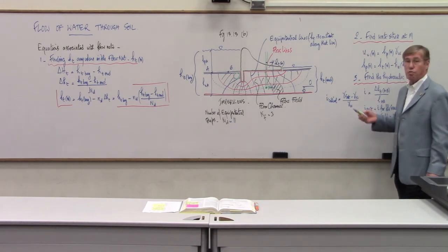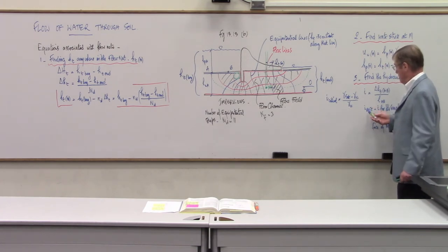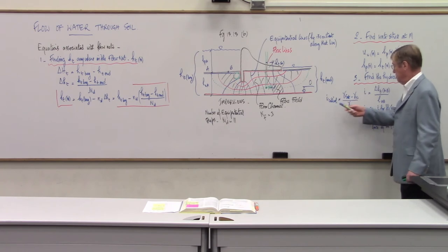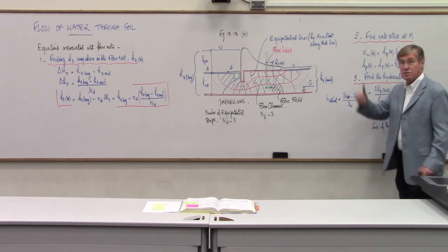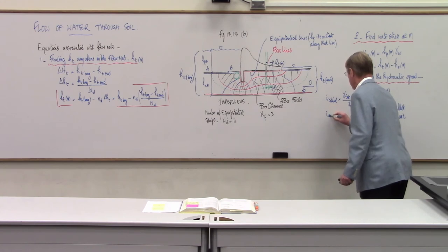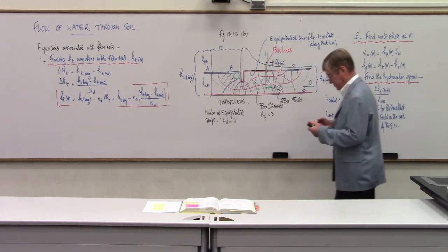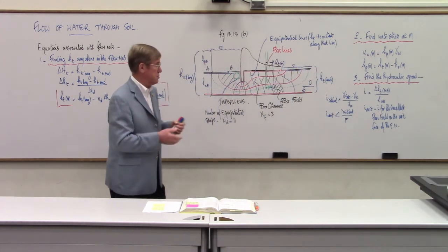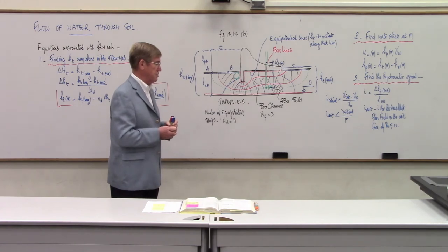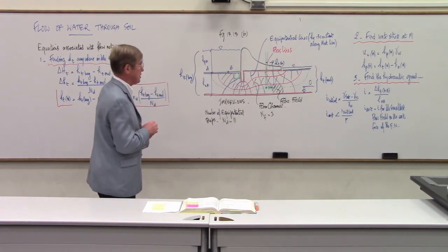We compare the exit gradient to the critical gradient: i_critical = (γ_sat − γw) / γw ≈ (20 − 10)/10 = 1. The condition for safety is: i_exit < i_critical / FS. Given the uncertainties in these calculations, a factor of safety of about 4 is typically used — a very serious margin against quicksand or piping failure.